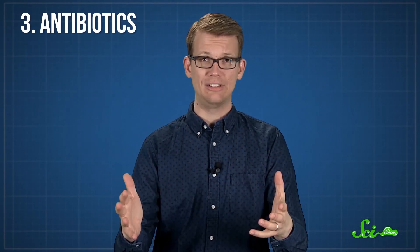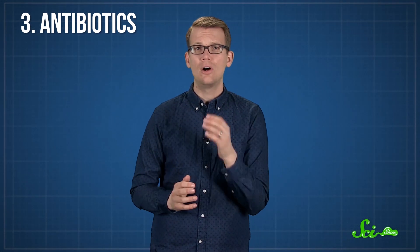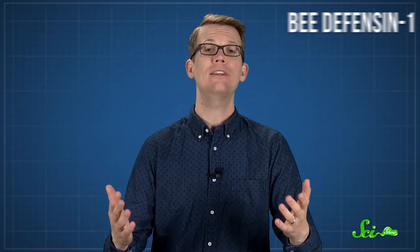The final thing bees do to make honey antibacterial? They put antibiotics in it. Some types of honey contain a protein called bee-defensin-1, which is exactly what it sounds like. Bee-defensin-1 defends bees. It's part of their immune system and protects them from certain bacteria, including ones that cause nasty diseases inside the hive.